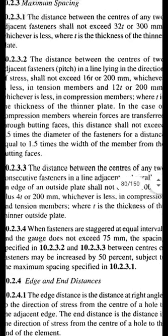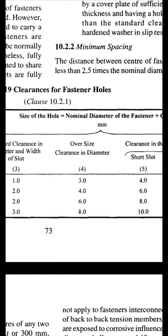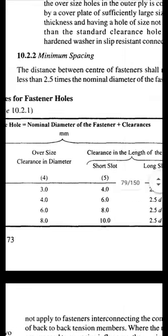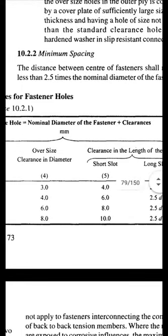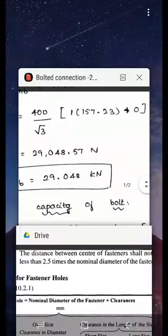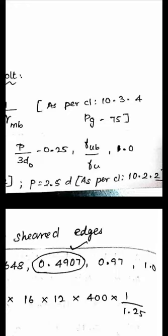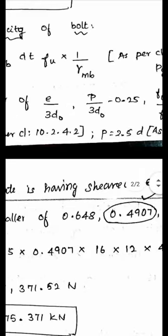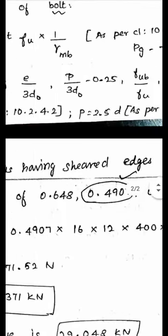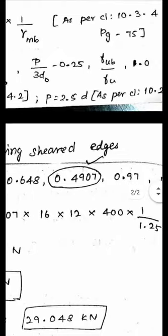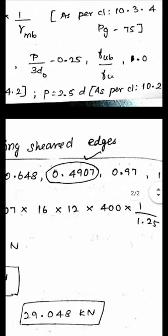For pitch p, per clause 10.2.2, minimum spacing shall not be less than 2.5 times the nominal diameter: 2.5 × 16 = 40mm. Use p = 40mm. Substituting into the four Kb expressions with Fub = 400 (grade 4.6 bolt) and Fu = 410 (plate grade): the four values are 0.648, 0.4907, 0.97, and 1. The least value is Kb = 0.4907.